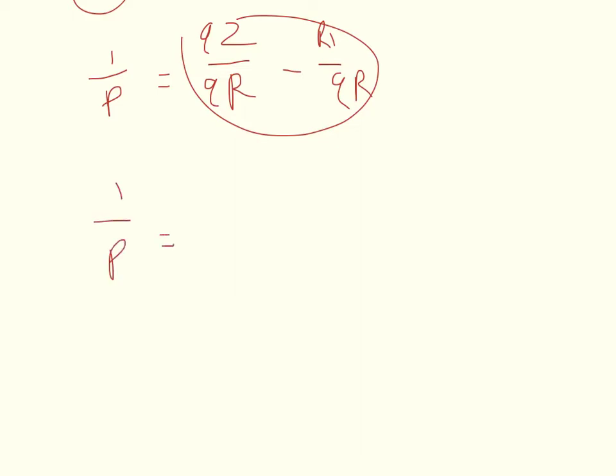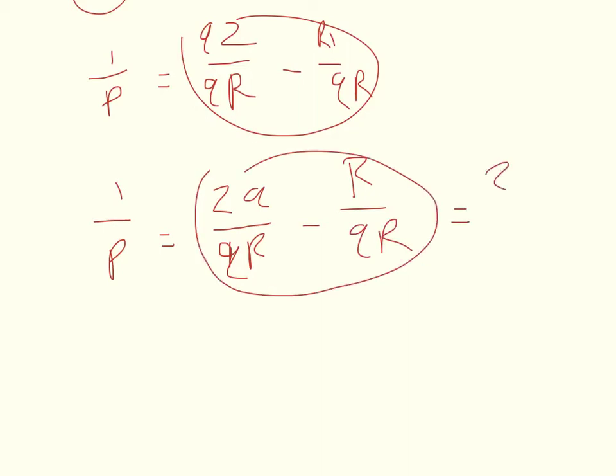So 1 over P equals 2Q over QR minus R over QR. So I can combine these terms now since they have a common denominator. So 2Q minus R over QR. And now I want to take the inverse of both sides. So P is equal to Q times R over 2Q minus R.